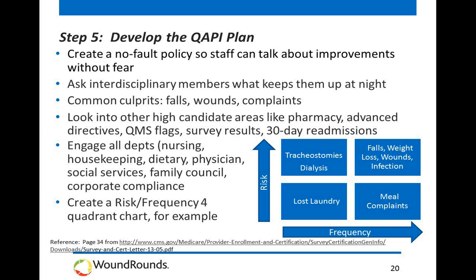Then you want to develop your plan. It's really important the first time you do QAPI to make sure people feel comfortable pointing out the challenges in your building. QAPI is a no-fault system — a place where people can be open and honest about the challenges they're seeing on the floor. You might want to reward the top two QAPI ideas your staff come up with, to show the importance of a no-blame organization. Then set up the areas you've identified into categories: high-risk high-frequency, high-risk low-frequency, low-risk low-frequency, and so on, based on what's going on in your specific building.